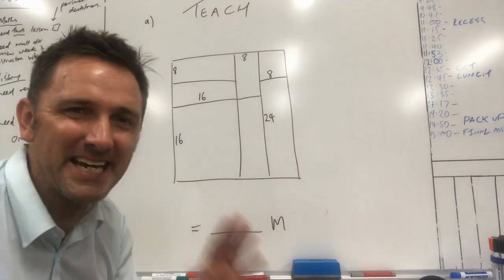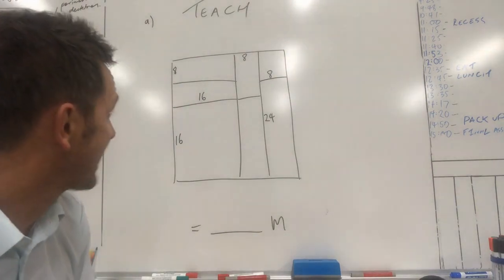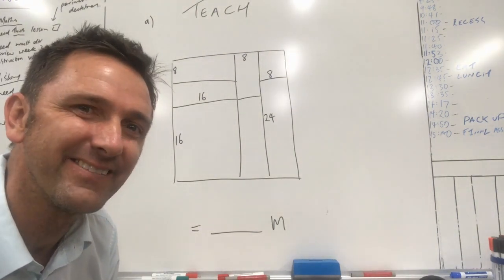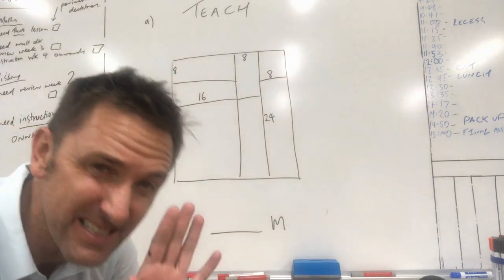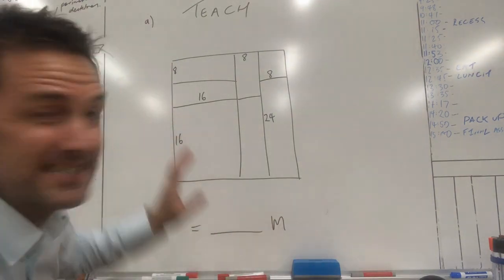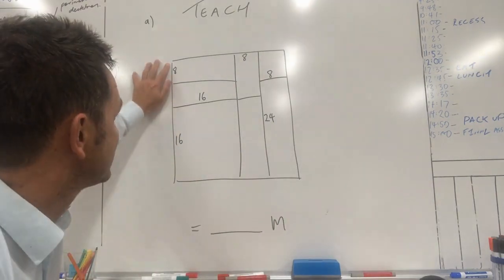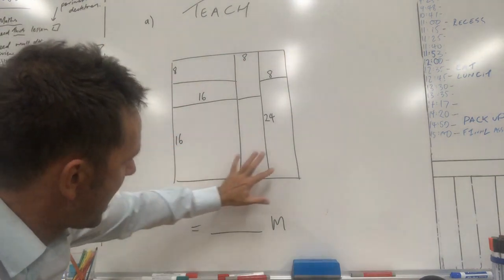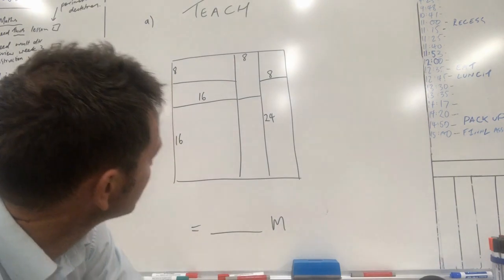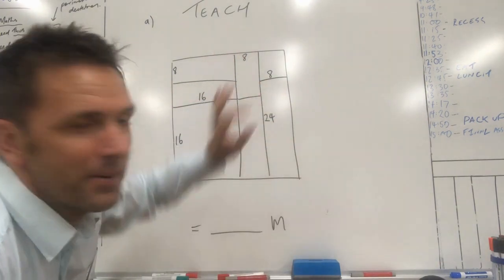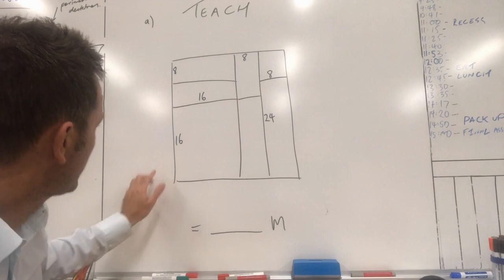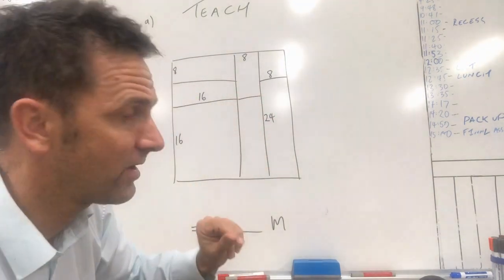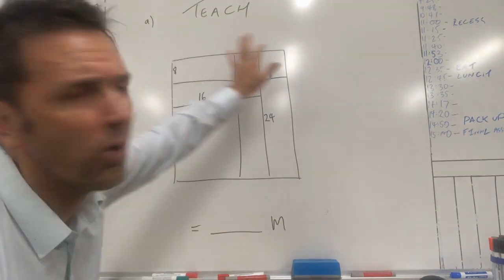Okay, here we are — we're in the teaching phase. Here's a rectangle, and we've got to find out the perimeter of it, and all the measurements aren't there, but we've got some. It's in metres by the way. We know that this length is eight metres, across here is 16 metres, this is 16 metres, all the way up there is 24 metres, along there is eight metres, and along there is eight metres. How are we going to find out the perimeter — the length of all the sides altogether?